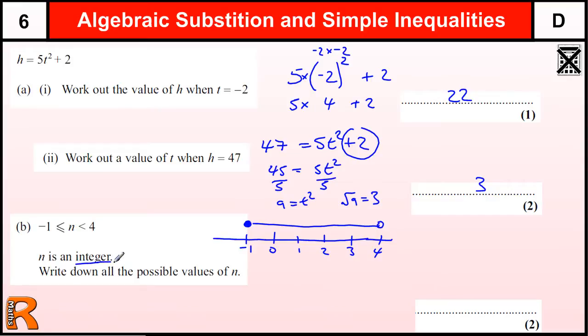Now n is an integer. That means whole numbers. So that's just minus 1, 0, 1, 2, and 3. It's important you know what this word means—integer means whole number. From there, the rest is fairly straightforward, as long as you know what these signs mean.